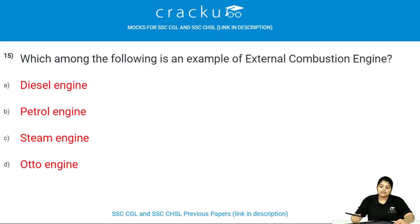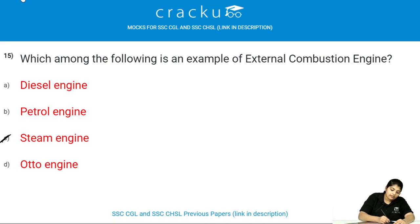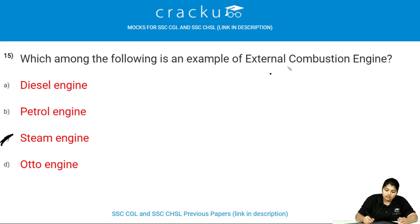Which among the following is an example of an external combustion engine? A steam engine is an example of an external combustion engine. We have two types of combustion engines: external combustion engine and internal combustion engine.